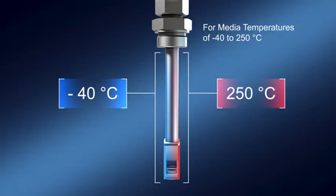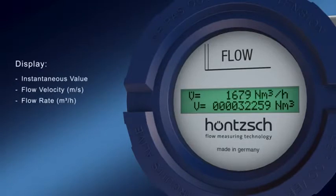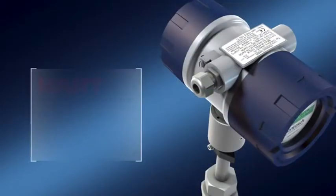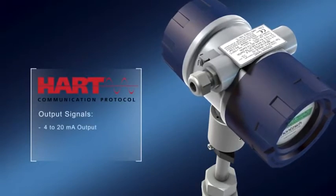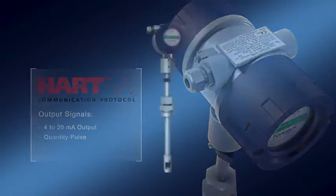The result: accurate performance data. You get an overview of the flow velocity, flow rate, standard flow rate or mass flow rate, and accumulated total quantity. The output signals are HART communication, 4 to 20 milliampere output, and the quantity pulse.